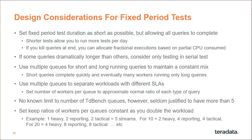You'll want to keep the ratios of workers per queue constant as you double the workload. So at five streams, you'll have one heavy, two reporting, and two tactical. When you move to ten streams, it's two, four, and four. And at 20 streams, you'll have four heavy, eight reporting, and eight tactical.